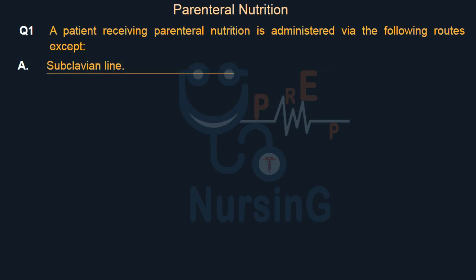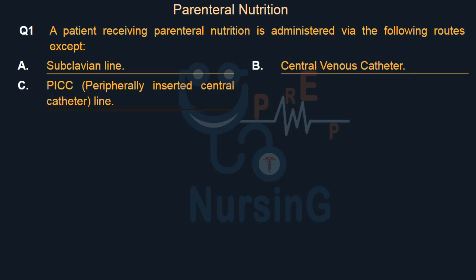Option A: Subclavian Line. Option B: Central Venous Catheter. Option C: PICC — Peripherally Inserted Central Catheter Line. Option D: PEG Tube.